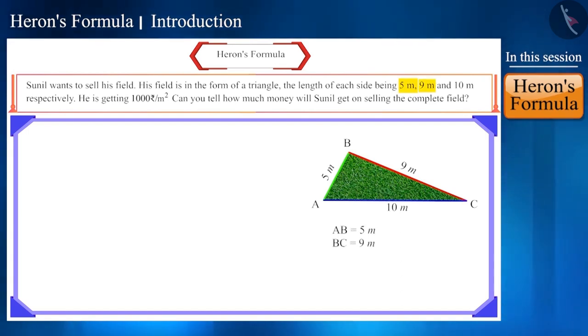we can see that this is a scalene triangle. We can assume the side opposite angle A as a, the side opposite angle B as b and the side opposite angle C as c.